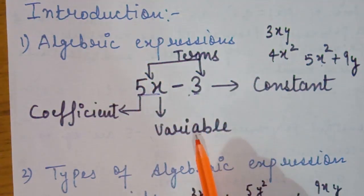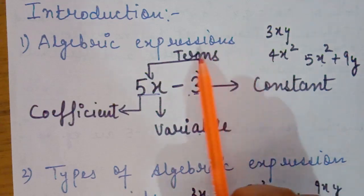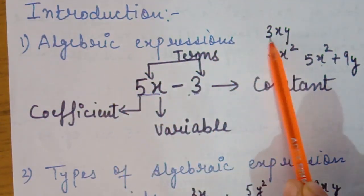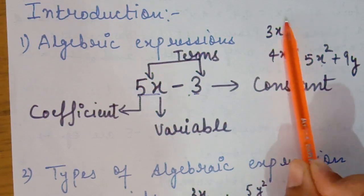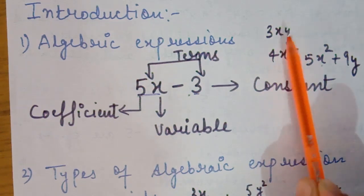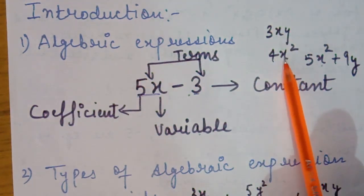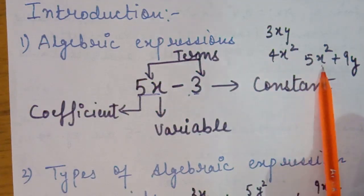In the expression 5x minus 3, the coefficient of x is 5. So in an algebraic expression we have four main components: variable, constant, terms, and coefficient. For example, in 3xy, we have two variables x and y, and 3 is the coefficient of these variables. Next, in 4x squared, x is the variable and 4 is the coefficient of x squared.